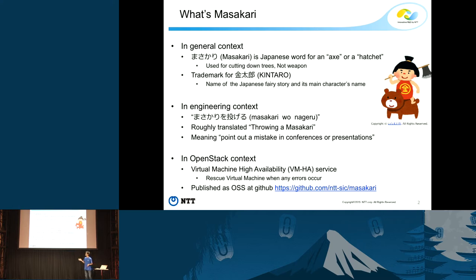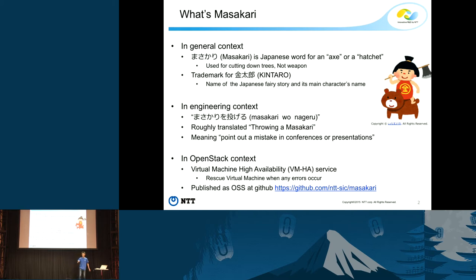Kintaro is a Japanese fairy story and the main character's name. In engineering context, we use 'Masakari wo nageru' — roughly translated, 'throwing Masakari.' It means pointing out a mistake in a conference like a summit or presentation. Especially, we're focusing on technical mistakes, not typos or misunderstandings.